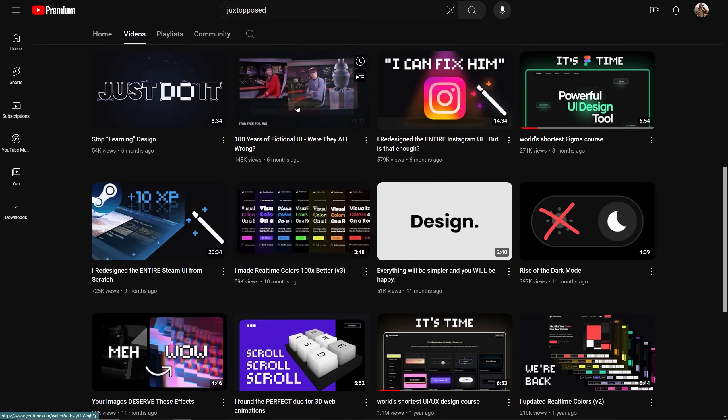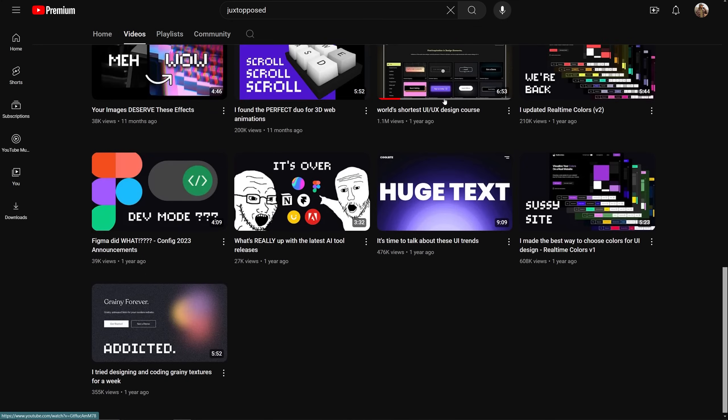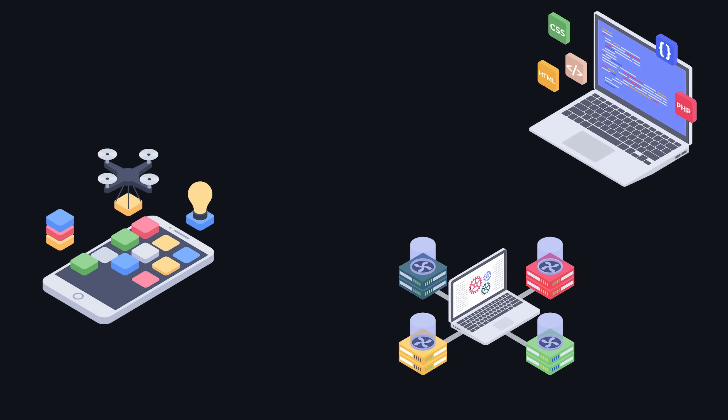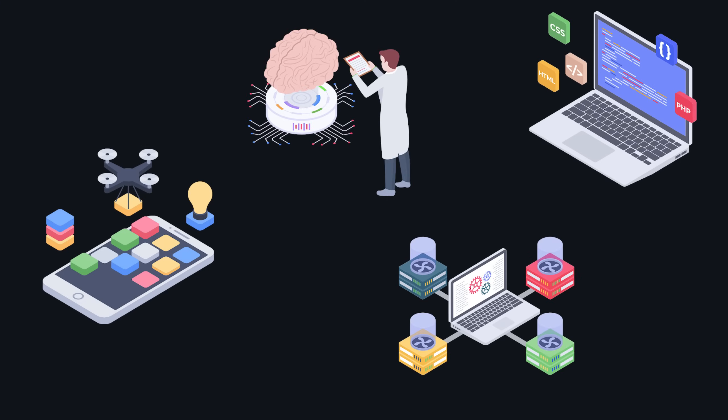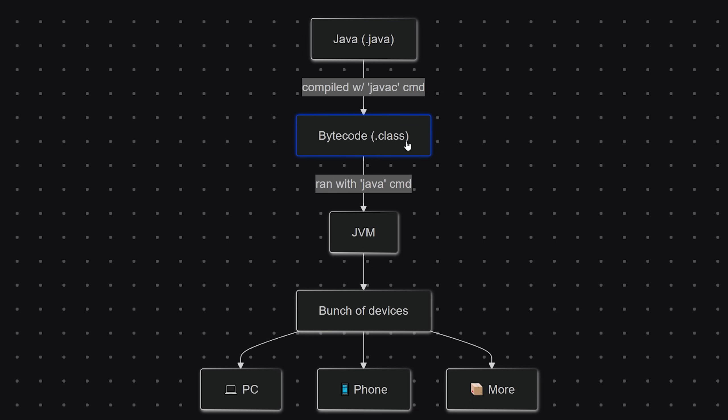So what the heck is Java? Java is an object-oriented programming language used to build anything, really: web apps, mobile apps, enterprise systems, scientific applications. The reason for its portability is because Java is compiled into bytecode — your .class file — which can be run on any device that has a JVM, or Java Virtual Machine.